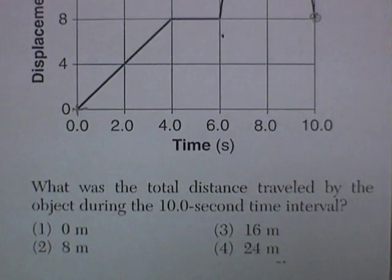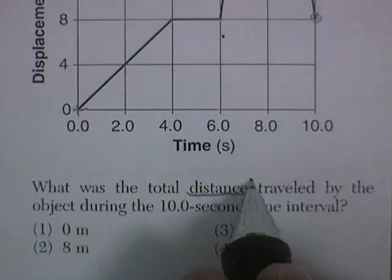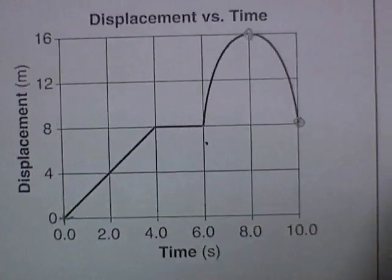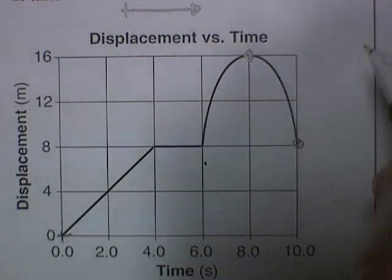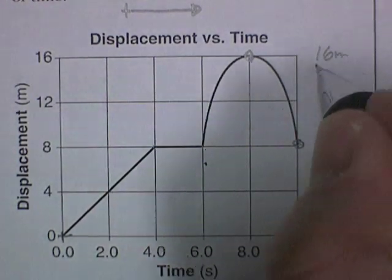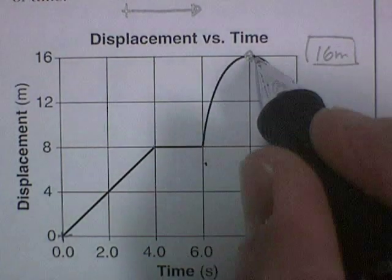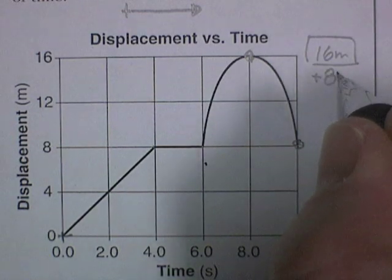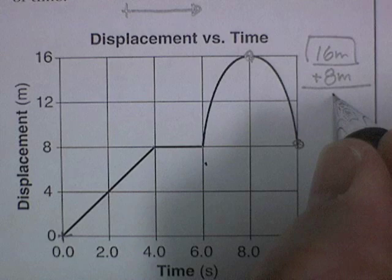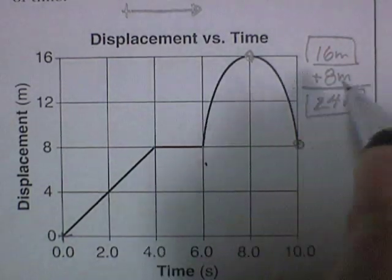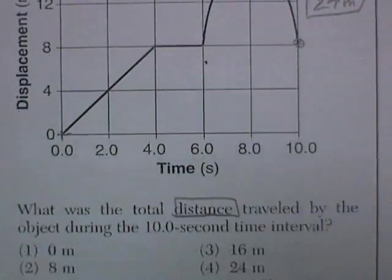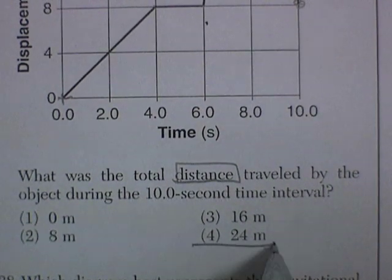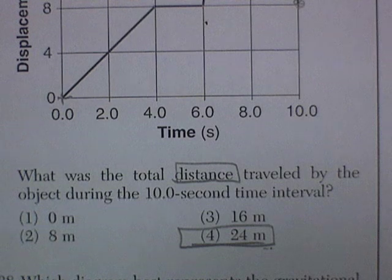What was the total distance traveled? Now distance means the entire path length. We were 16 meters away for a while. And then we came backwards eight meters. But that means we traveled an additional distance of eight meters. So a total distance traveled would be about 24 meters. Let's see if that's one of the choices. Oh look, yes it is. 24 meters. That works.